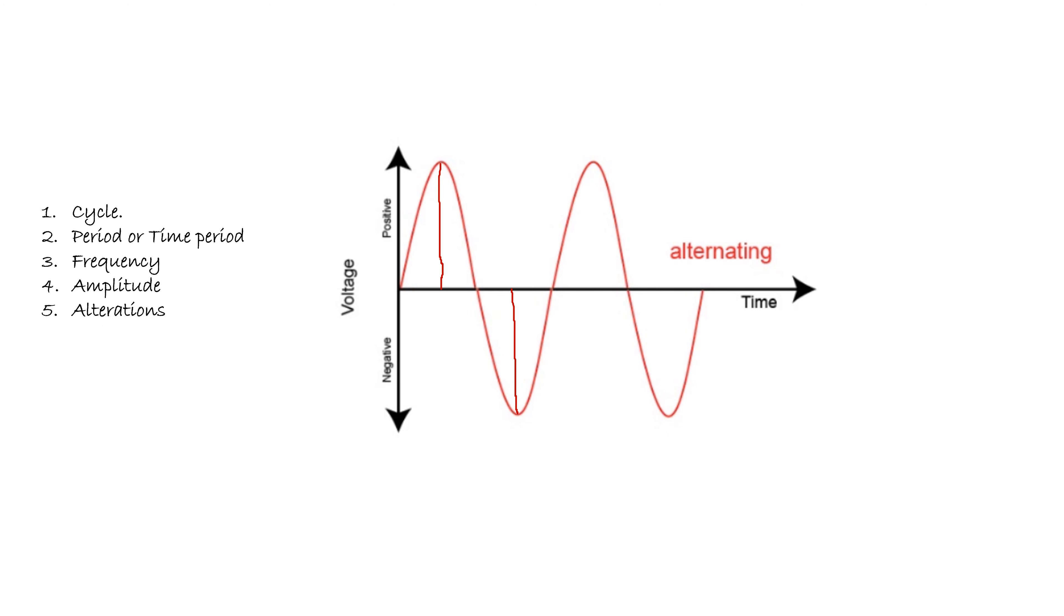The next term is alteration. Alteration means one half of a cycle. It could be positive or negative. This is positive alteration, or positive half cycle, and this is negative alteration, or negative half cycle.